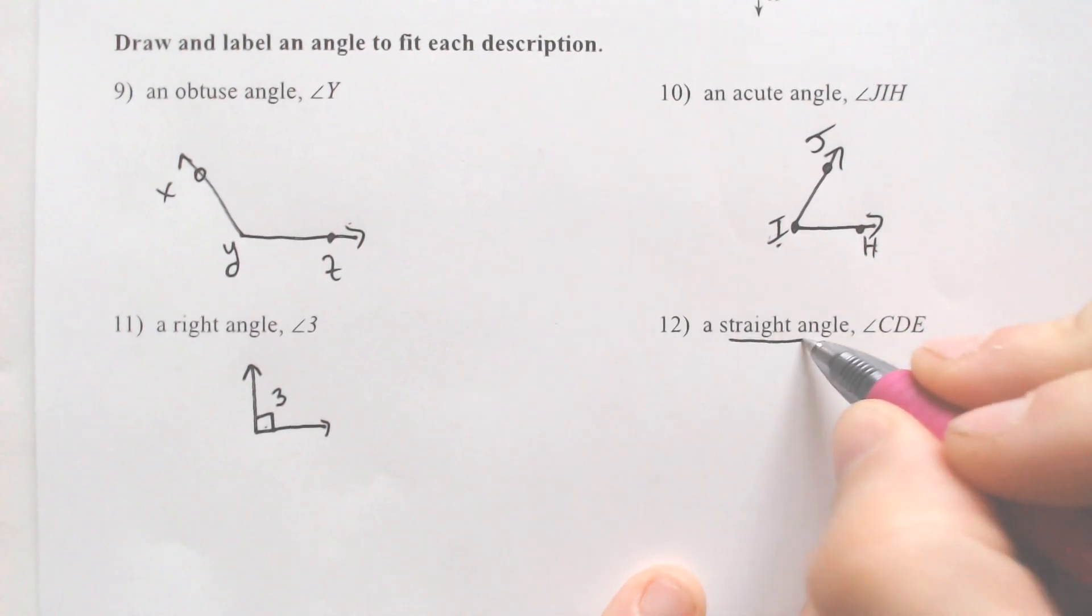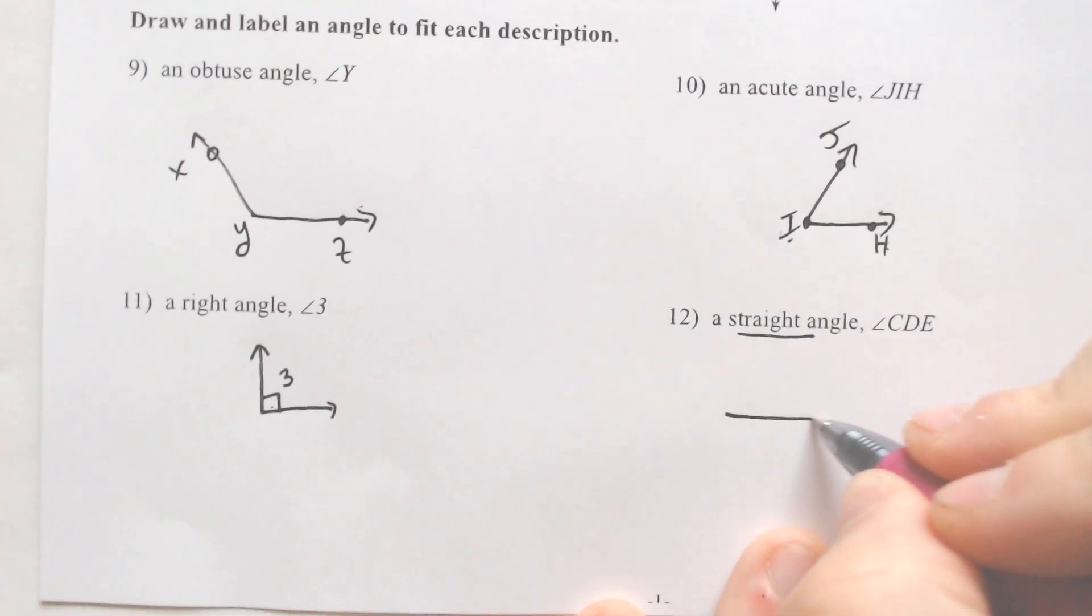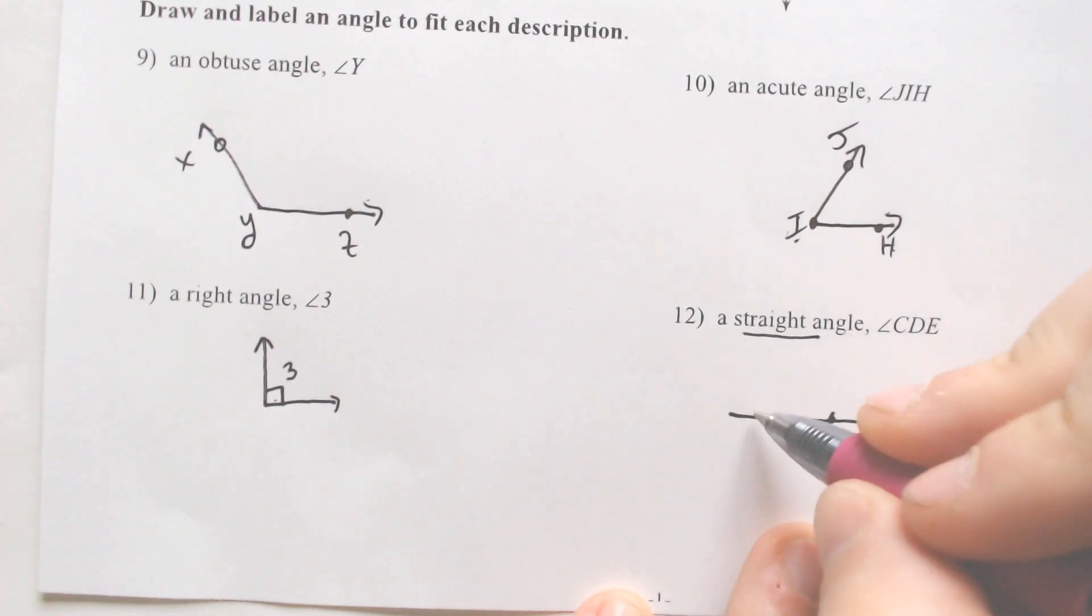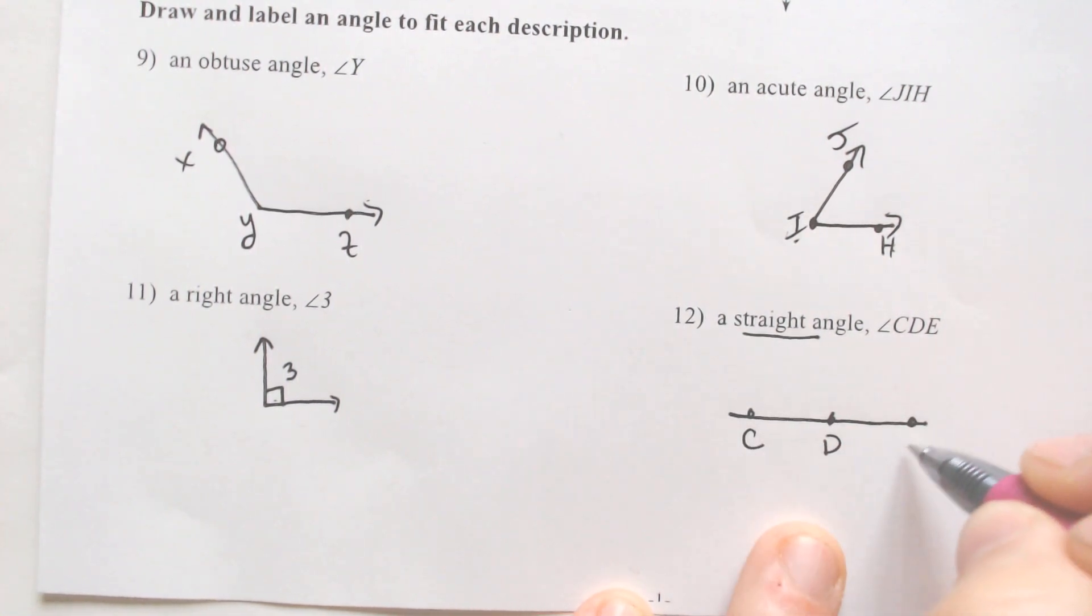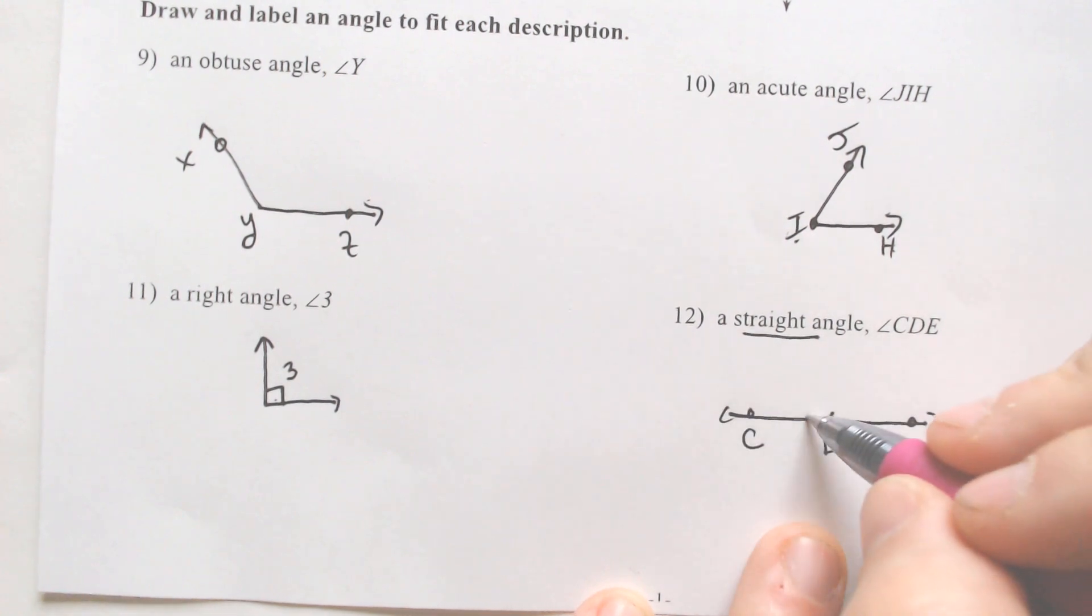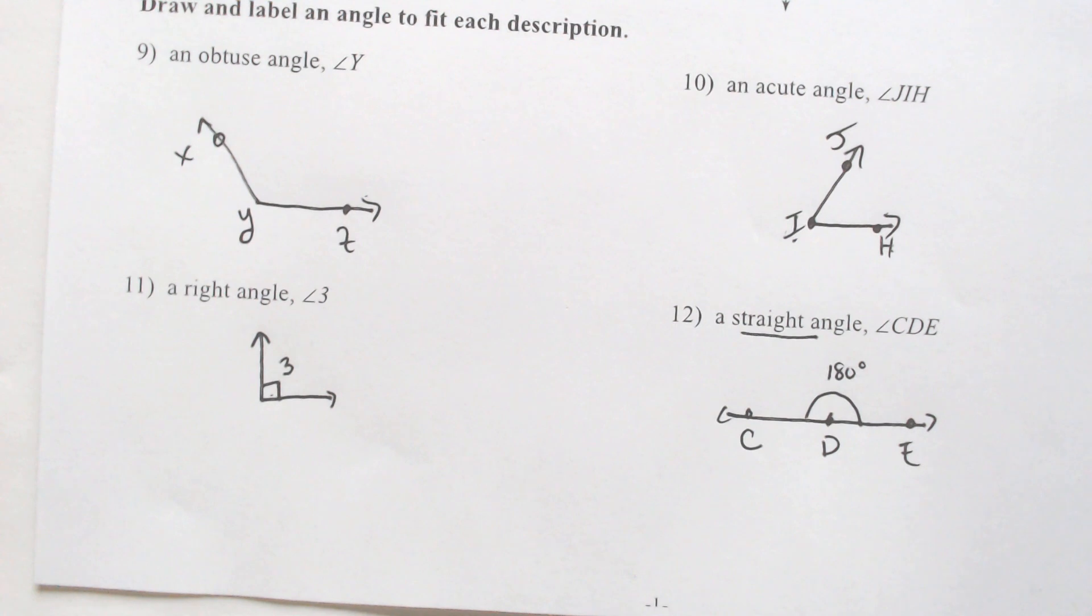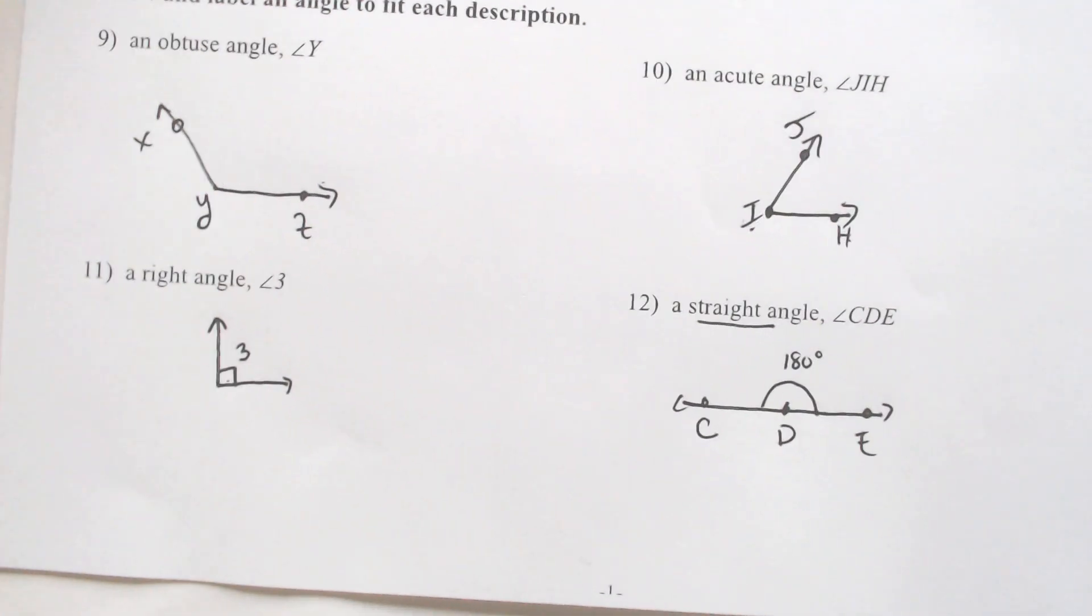A straight angle is a fancy way of saying a line, and we have D in the middle, we have C, and we have E, and we can throw the arrows there. Notice how this is forming 180 degrees, because that is what a line is. You don't need to fill in the angle there. That was just me embellishing.